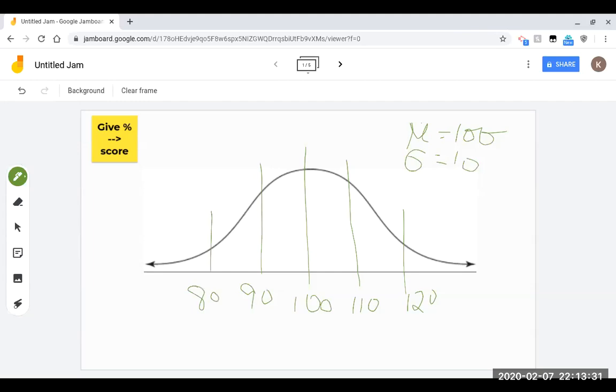So even though we're going kind of backwards where I'm going to give you a percent and ask for a score, these numbers are still relevant. So we're going to want to put in what we already know, which is the 34, 14, 2, and then 34, 14, 2.